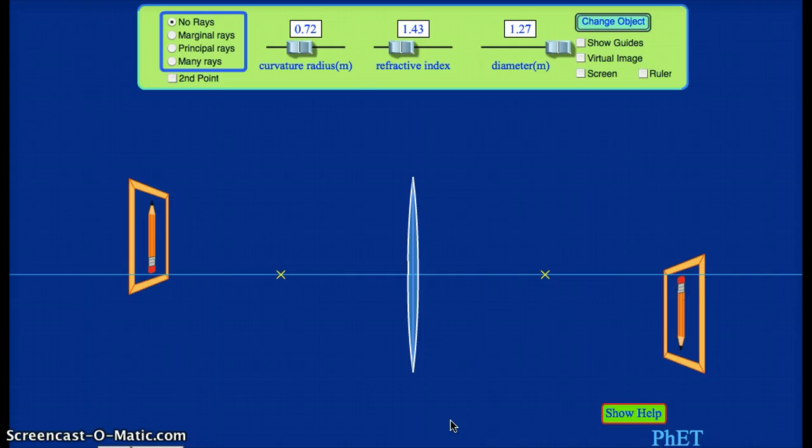So if we were just told that you have some object, you were told how far away it is from this converging lens, and you were told the focal length of this lens, how would we figure out, how could we draw a picture to show us where the image is? And the picture that we're going to draw is called a ray diagram.